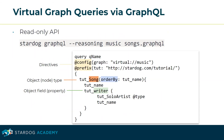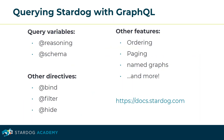Stardog has a read-only API for virtual graph queries, and queries can be defined in files that define the directives, the objects, and the object fields that you're interested in. GraphQL queries in Stardog can take advantage of query variables, such as using reasoning or referencing a schema, as well as other directives such as binding, filtering, or hiding results, and features such as ordering, paging, referring to named graphs, and more. For more information, please refer to our docs.